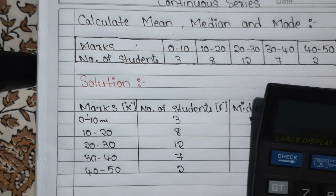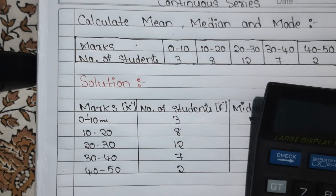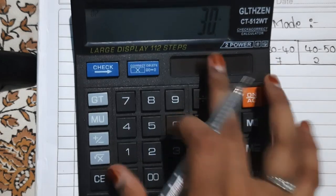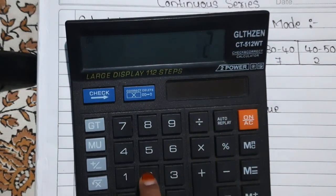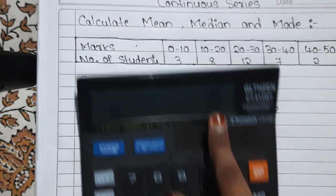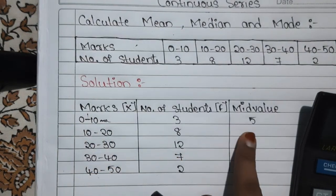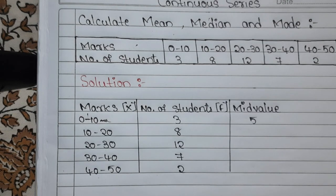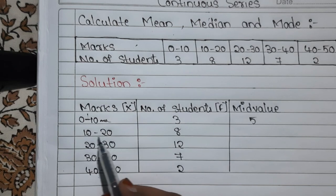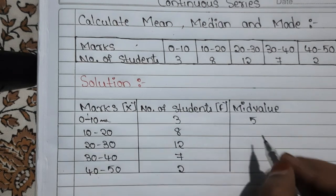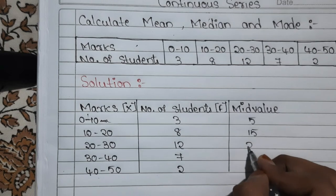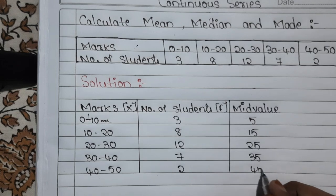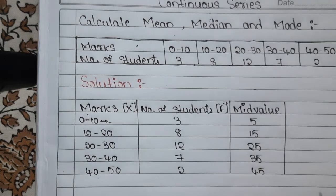To find the mid value, add both boundary numbers and divide by 2. For example, 10 plus 20 equals 30, divided by 2 gives 15. So: for 10–20, mid value is 15; for 20–30, it is 25; for 30–40, it is 35; and for 40–50, it is 45.